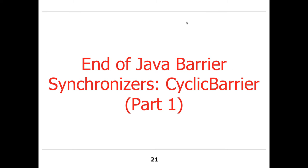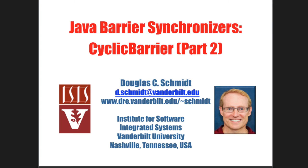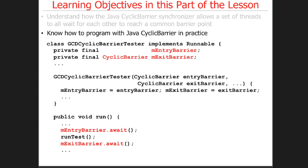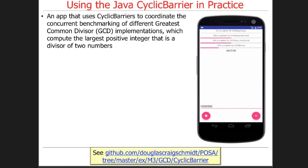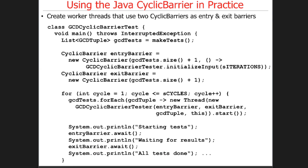That's the end of that discussion. It's a very short topic. Now that we've talked about what cyclic barriers are conceptually, let's take a look at an example. This example will implement the same functionality as the previous example, but it'll use the cyclic barrier instead of the countdown latch.